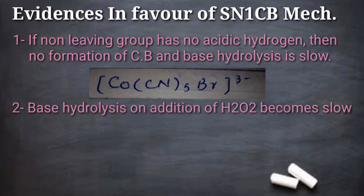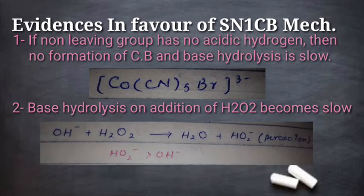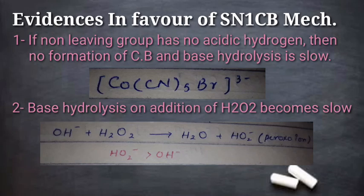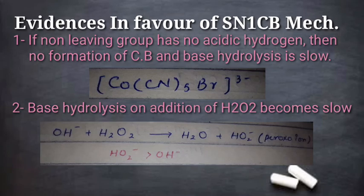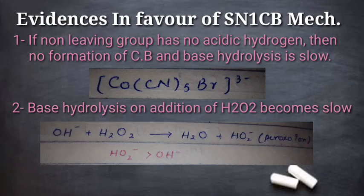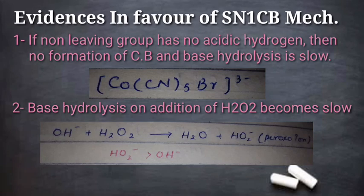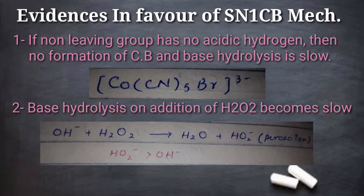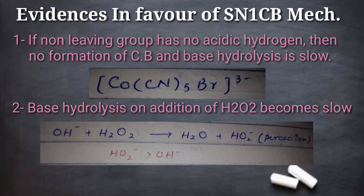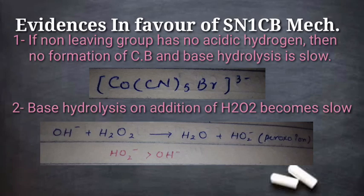Evidence 2: when hydrogen peroxide is added, it reacts with hydroxide ions to form the peroxo ion, which is a better nucleophile than the hydroxyl ion. If the mechanism were SN2, the reaction should be faster with a better nucleophile. However, the reaction is slow. This means the nucleophile strength does not affect the rate, confirming it follows SN1CB mechanism — where the rate depends on the conjugate base concentration, not the nucleophile.